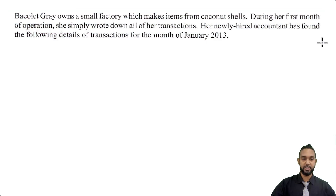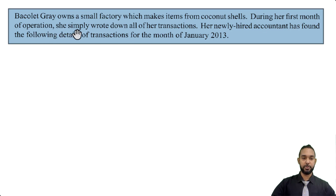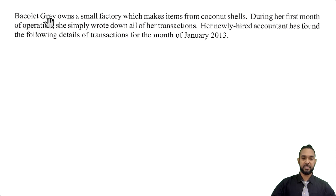The information reads: Barclay Gray owns a small factory which makes items from coconut shells. During her first month of operation, she simply wrote down all of her transactions. Her newly hired accountant has found the following details of transactions for the month of January 2013. I'm going to do the solution slightly out of order because it'll make things a bit more efficient and flow more cleanly.